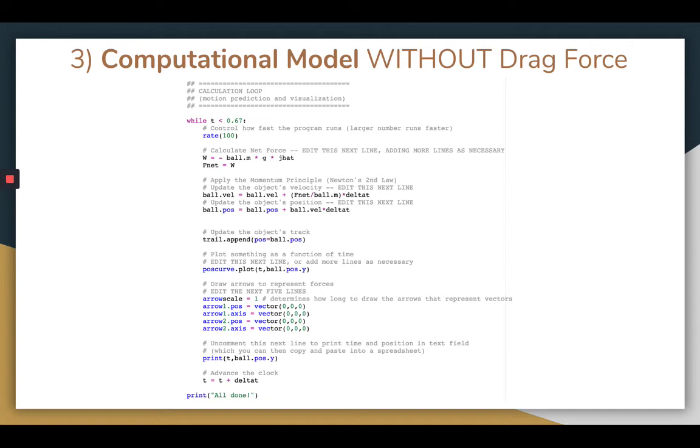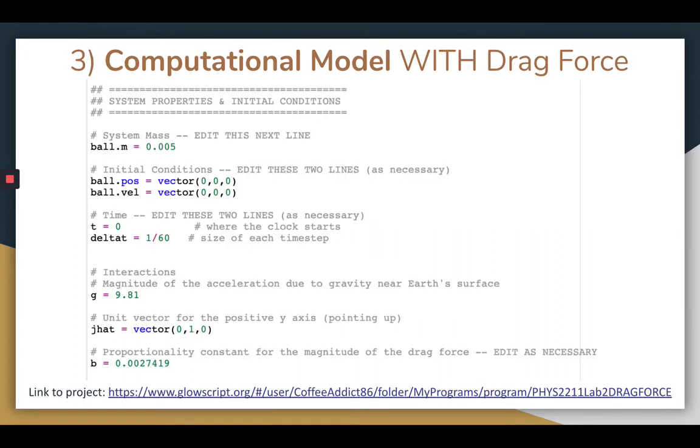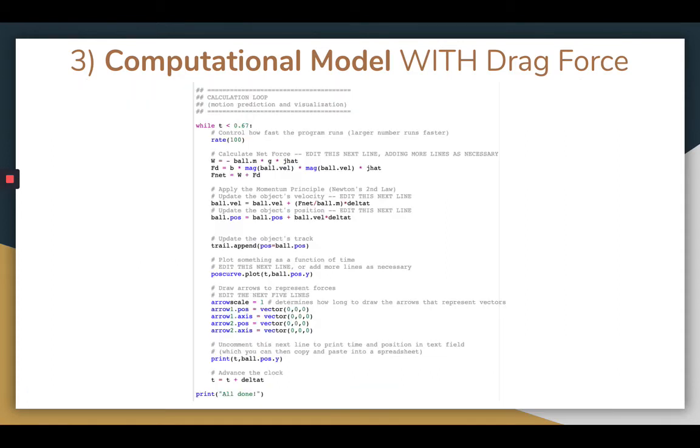So here we see where I've calculated the force due to gravity. Since I assume no drag, I've set the net force equal to the weight of the box. Now the computational model with the drag force has a few key differences, one being that the proportionality constant is not 0. I set it to 0.0027419, a value I calculated through trial and error until the model predicted a final position equal to that of the observed motion. Another key difference is that the net force now includes both the force due to gravity and the drag force. You can see where I've calculated the drag force and included it in the net force.